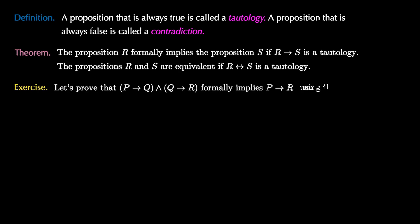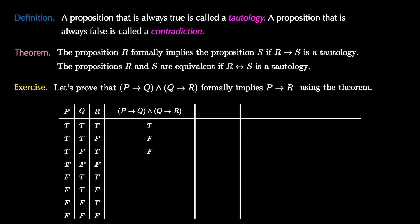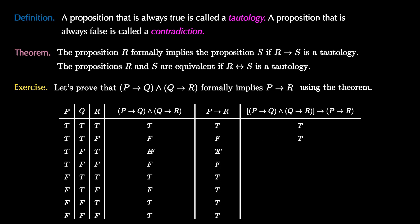Let's use this theorem to show that P implies Q and Q implies R formally implies the proposition P implies R. We need a truth table with P, Q, and R — eight rows for the eight possible truth values simultaneously. One column has the proposition P implies Q and Q implies R, filled in using the truth tables for and and implies. The next column is P implies R, which has two places where it's false. The final column connects the latter two columns with a conditional connective. In every single instance we get a true statement, so the final column is a tautology. Therefore, P implies Q and Q implies R formally implies P implies R.